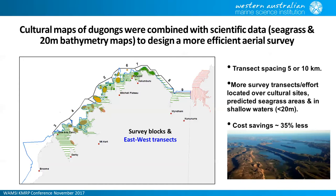Transects are typically spaced at five to ten kilometers apart. Using the stratified design, Pete was able to place more transects in areas more likely to have Dugong based on habitat or cultural information, and fewer in less likely areas. This resulted in a cost saving of about 35 percent compared to a uniform survey design.